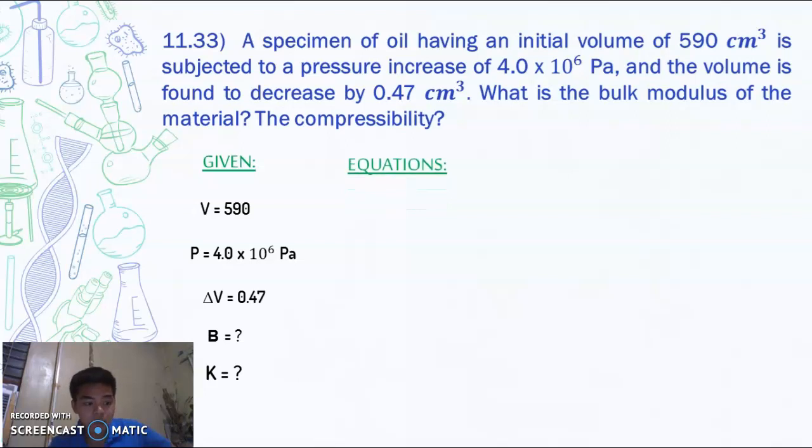So the equations to be used are B equals negative P all over change in V over V. So making it into a simpler equation, it will be negative P times V over change in V. As for compressibility, our formula will be 1 over B.